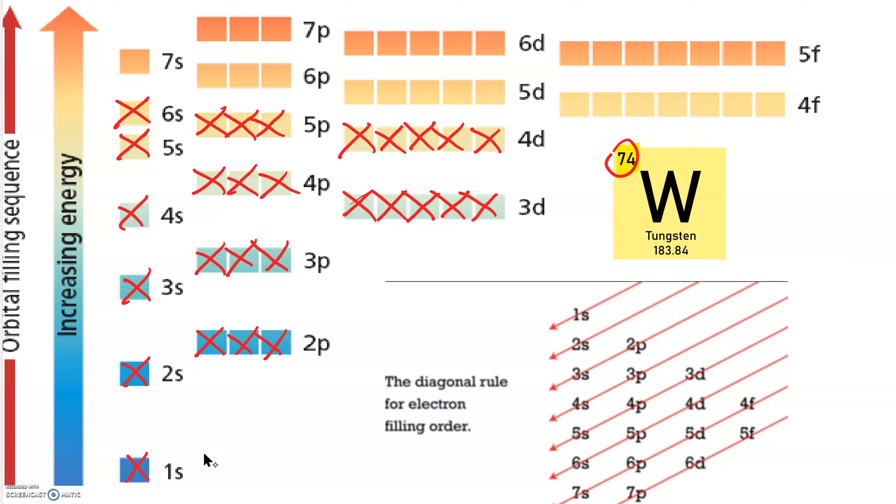After 6s, 4f, 57, 58, 59, 60, 61, 62, 63, 64, 65, 66, 67, 68, 69, 70. After 4f, 5d, 71, 72, 73, 74.